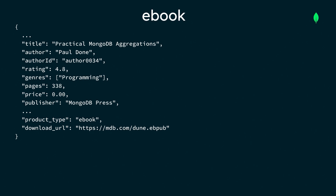Let's examine this document for an ebook to see what the inheritance pattern looks like in practice. The ebook includes all the attributes shared by all the book entities, like title, author, genres, price, and publisher.